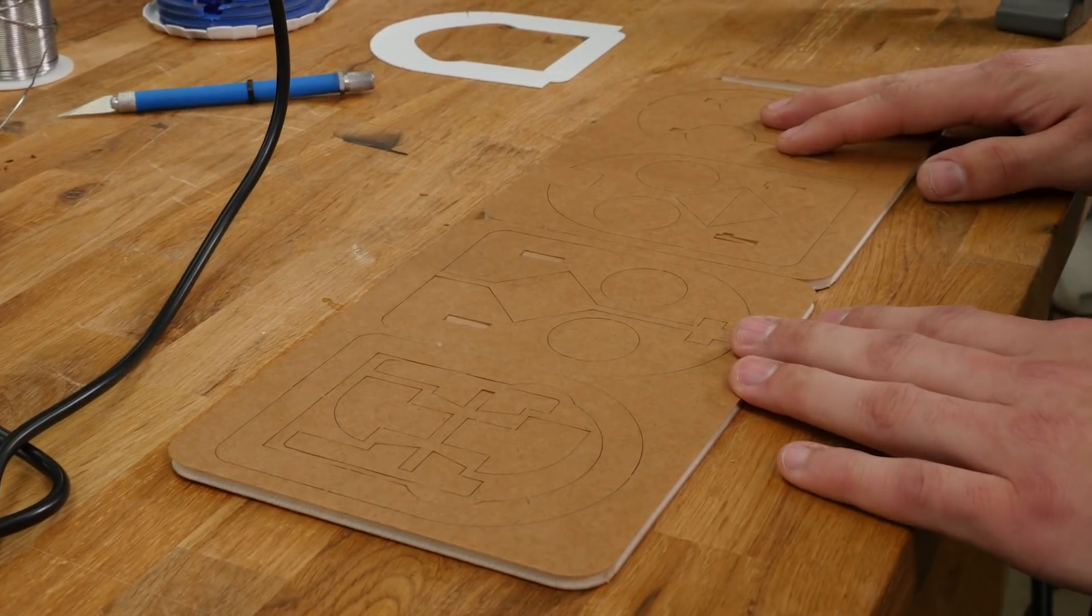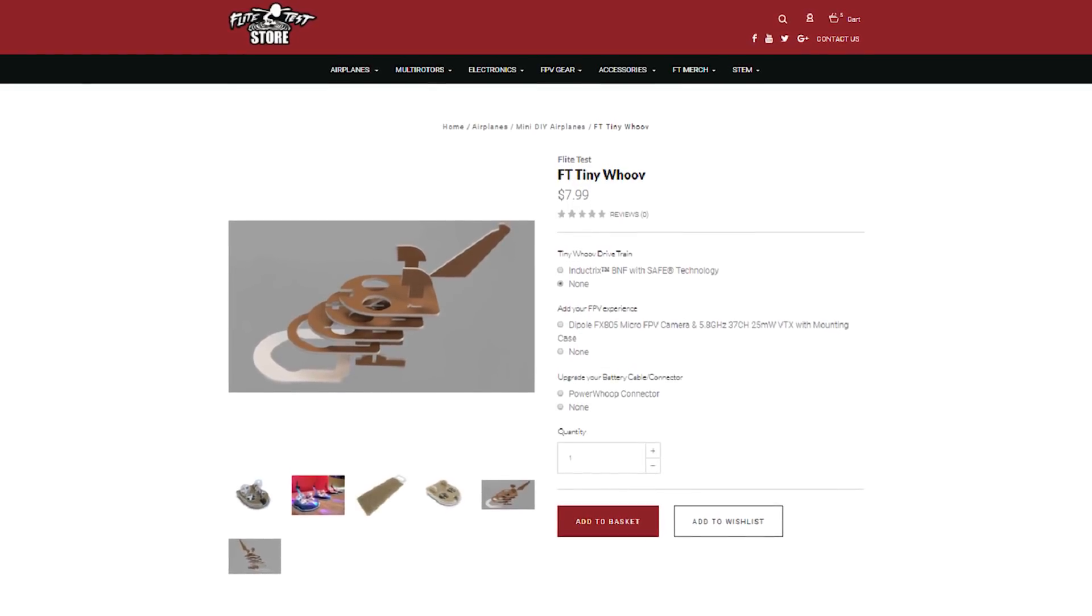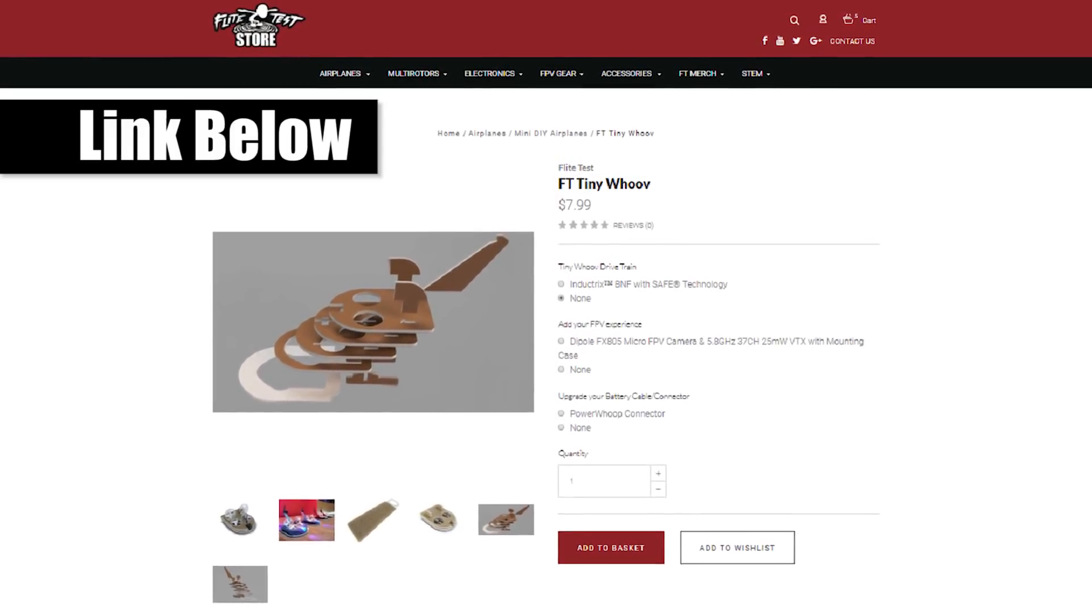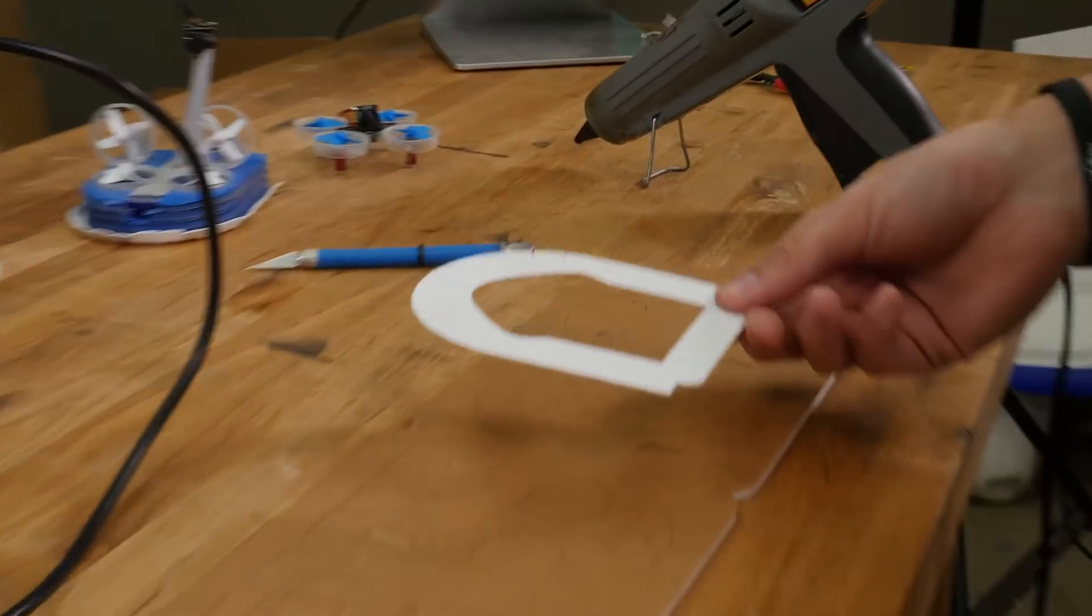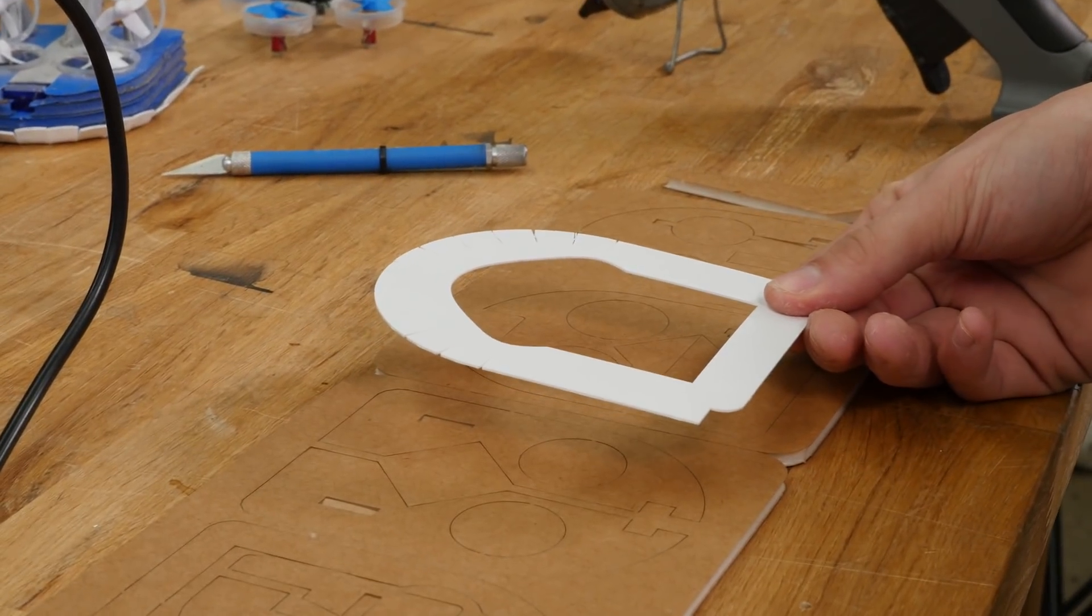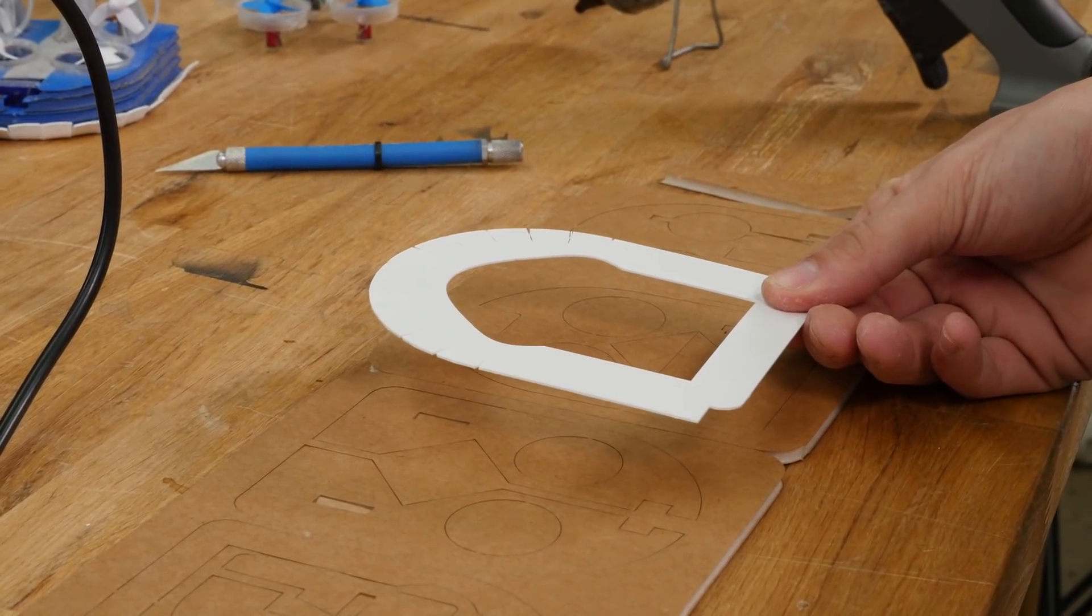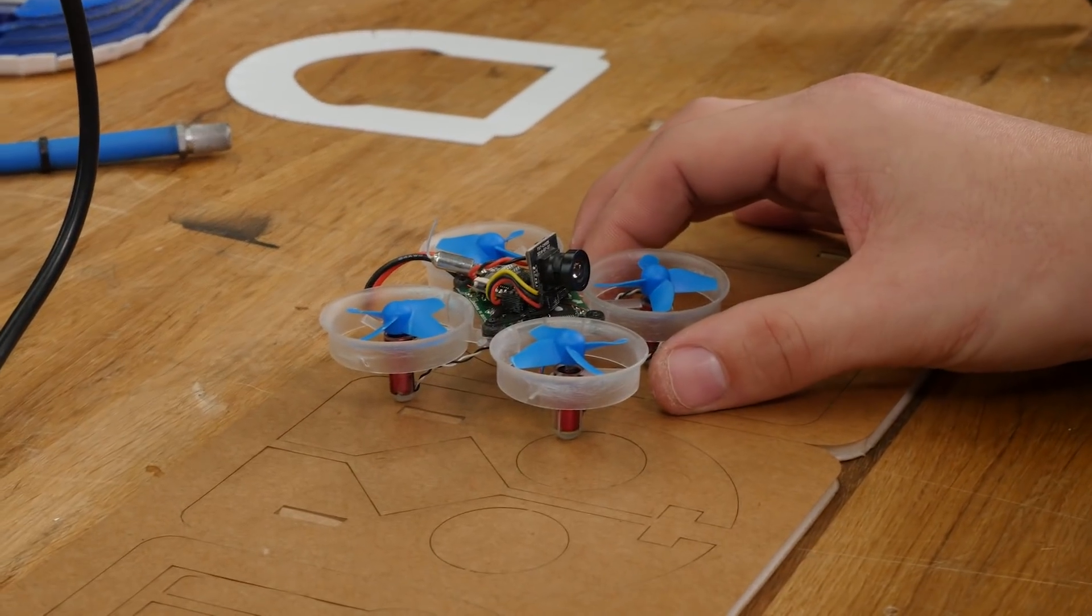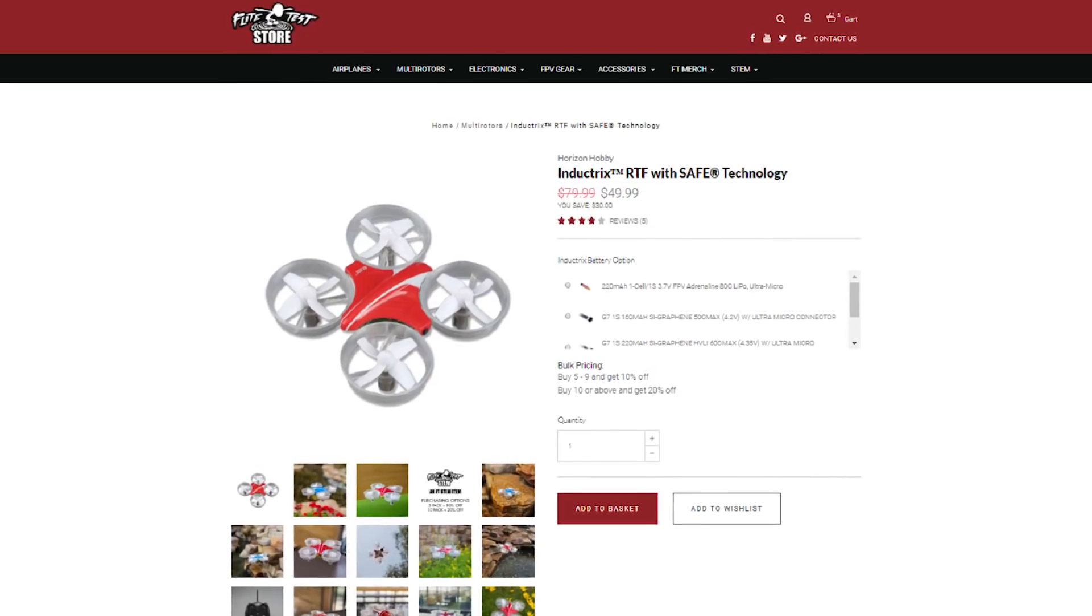Foam board you can buy at the local dollar store. We have a speed build kit available for purchase and we also have the plans free available online. And a low friction plastic, we provide one in our speed build kits. And a micro drone. You can use a number of brands, but we like to use an inductrix.